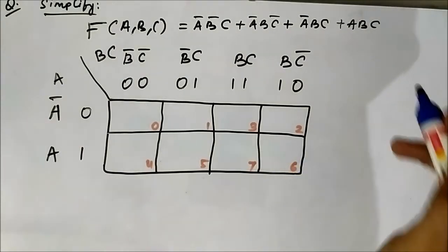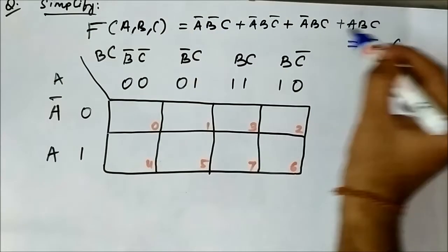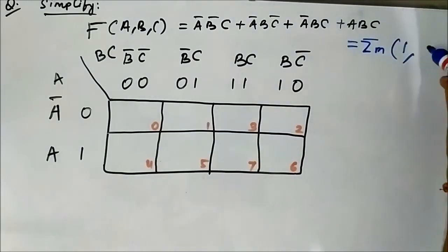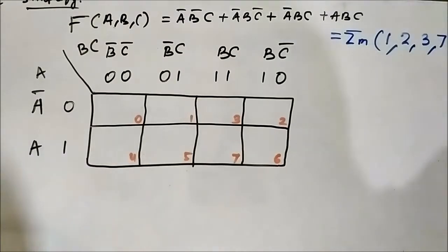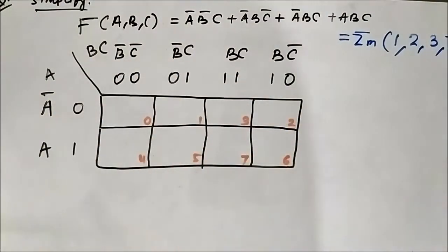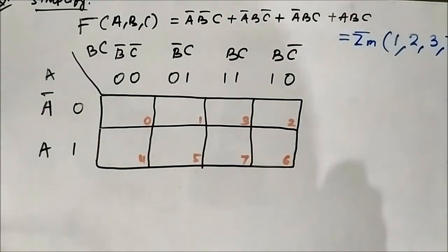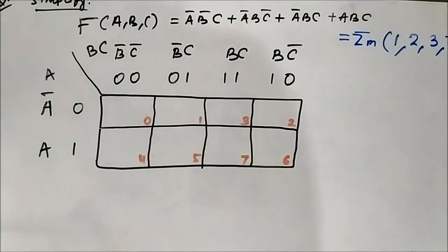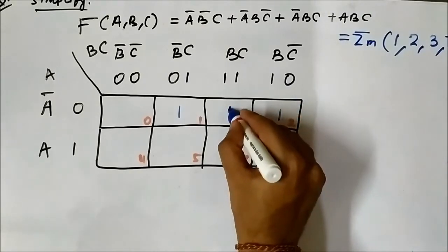For simplicity we will write the minterm version. A bar B bar C is 0 0 1 = minterm 1. A bar B C bar is 0 1 0 = minterm 2. A bar B C is 0 1 1 = minterm 3. A B C is 1 1 1 = minterm 7. So the minterm values are 1, 2, 3, 7. We have the standard 3-variable SOP K-map format ready, with decimal values written in small.